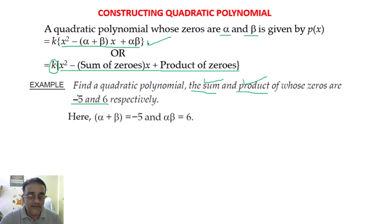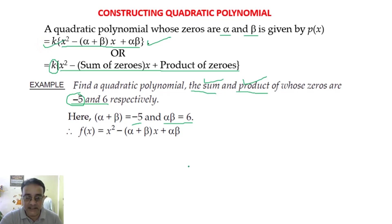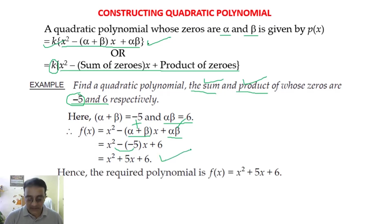Here α + β = −5 and α × β = 6. Now writing the formula: x² − (α + β)x + αβ, we substitute these values. The minus and minus become plus, so x² + 5x + 6 is the final answer.